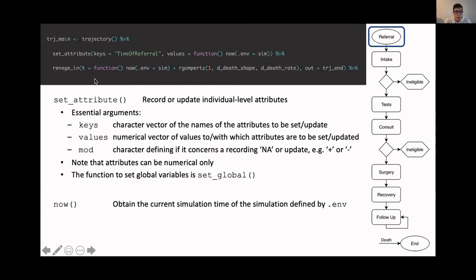And then the second step in this initialization, we add this renege in. And what that does, it basically schedules an event to happen sometime in the future. In this case, it's background mortality. We sample a value from a Gompertz distribution. And regardless of where the individual is in the pathway, at the time of this event, it will be moved to the end trajectory, which we will define later. That's how we simulate background mortality in this case.